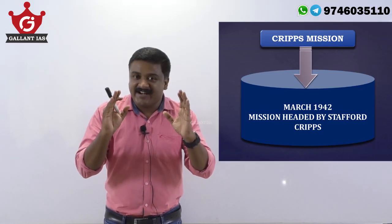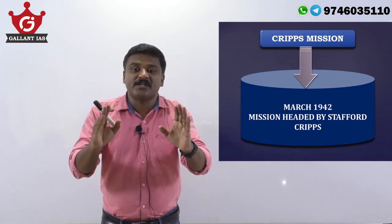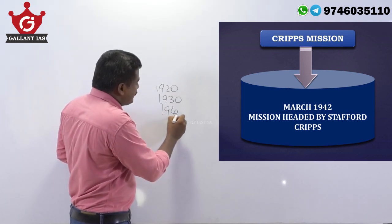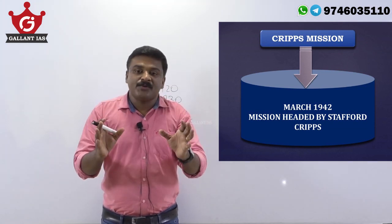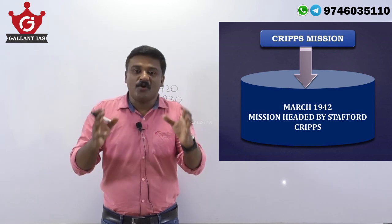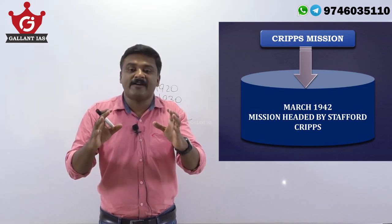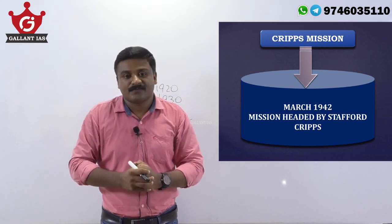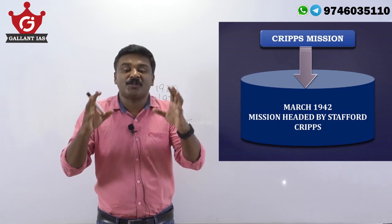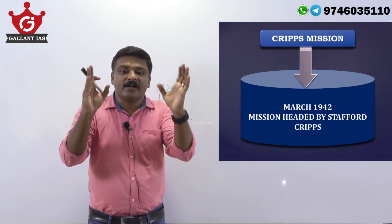When you prepare modern Indian history for your UPSC preliminary examination, you study the 1920s, 1930s, and 1940s very well, because so many events and movements happened during this period. You must know the causes, consequences, and relevance in modern Indian history, because a lot of questions UPSC has already framed from these decades. Today we will be discussing Cripps Mission and its different important dimensions.